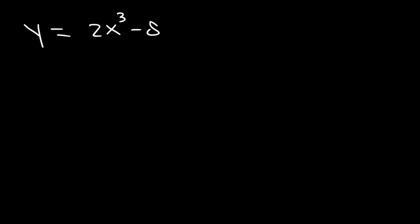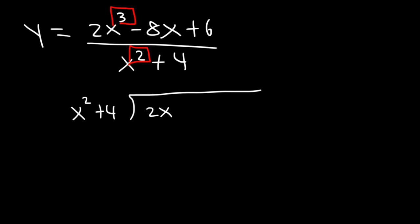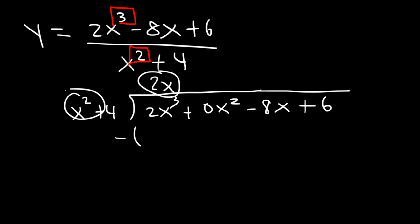Now what about 2x cubed minus 8x plus 6 divided by x squared plus 4? The degree of the numerator exceeds the denominator by 1, so there exists a slant asymptote. Don't forget about the 0x squared term — you need to write that in order to divide correctly. Divide 2x cubed by x squared to get 2x. Multiply: 2x times x squared is 2x cubed, and 2x times 4 is 8x.